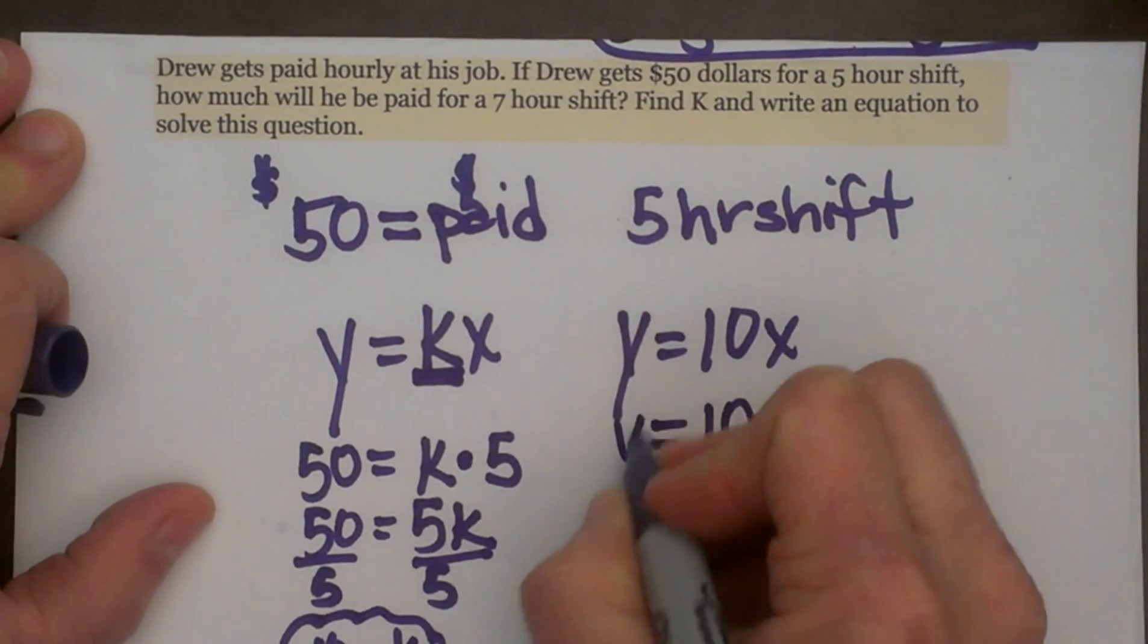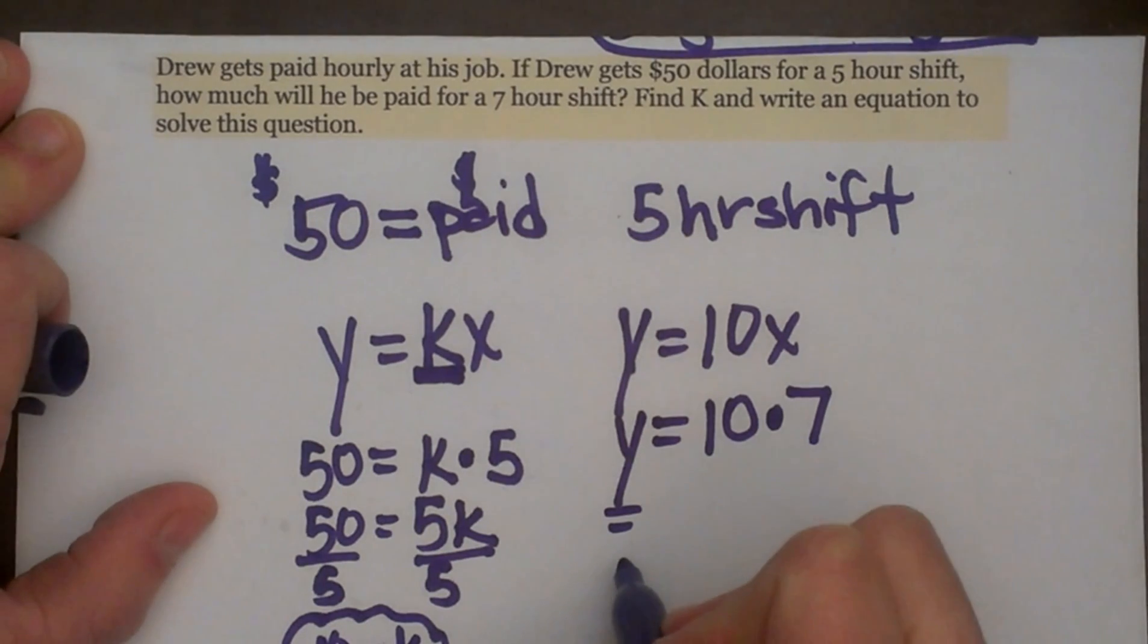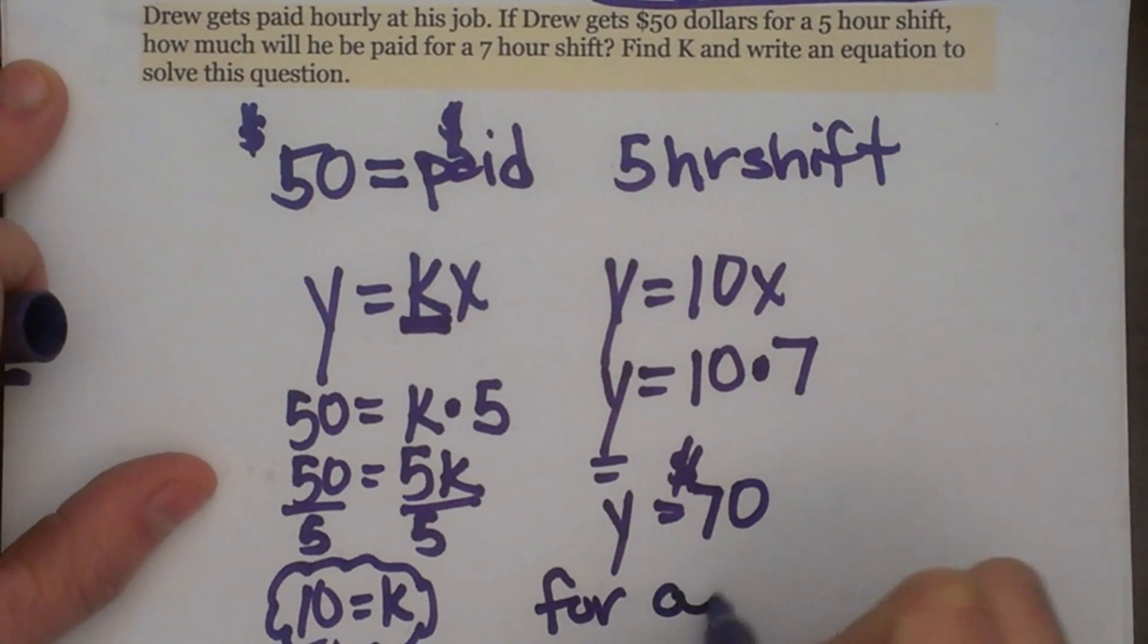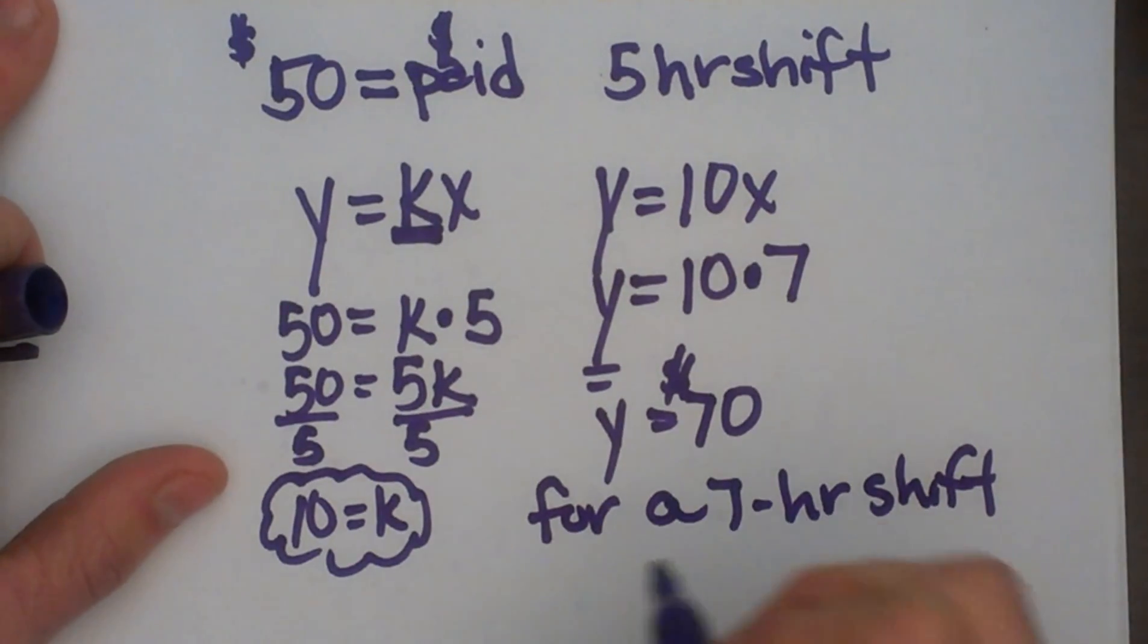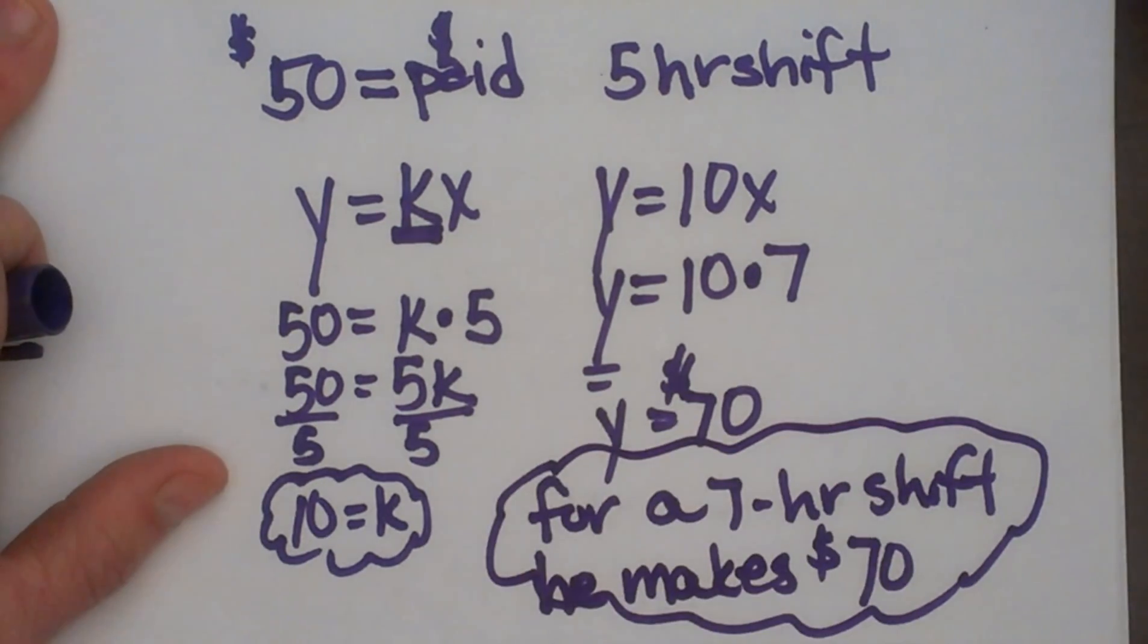And we're going to solve for the dependent variable, or Y. So that means he's going to make $70 because he's making $10 an hour. So for a 7 hour shift, he makes $70, and that is our answer.